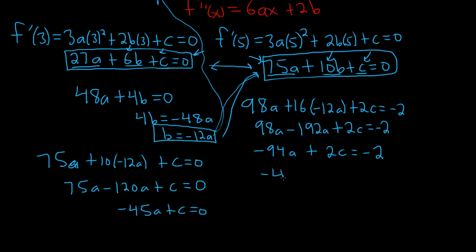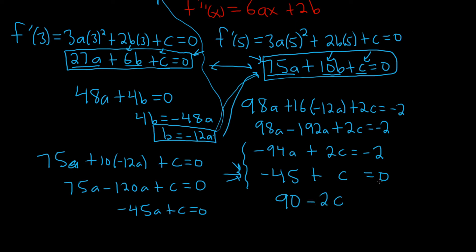We have −94a + 2c = −2 and −45a + c = 0. Multiplying the second equation by −2 gives 90a − 2c = 0. Adding to the first equation: −94a + 90a = −4a, the c terms cancel, giving −4a = −2.